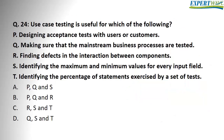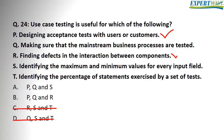Question 24. Use case testing is useful for which of the following? We have a few options, and then the answers have some of those options, so we need to look at each option to determine if it's true or false. Option P: is use case testing useful for designing acceptance tests with users or customers? Correct. Option S: identifying the maximum and minimum values for every input field — this is wrong because this is mainly regarding boundary value analysis, not use case testing. So the correct answer here should be B.